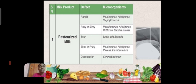Defect: Ropy or Slimy. Microorganisms used: Pseudomonas, Alcalogenes, Coliform, and Bacillus subtilis. Defect: Sour. Microorganism: Lactic Acid Bacteria. Defect: Bitter and Fruity. Microorganism: Pseudomonas, Aclogenus, Protease, and Flavobacterium.